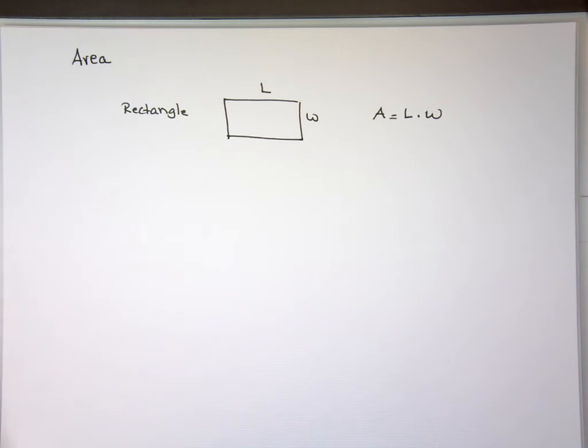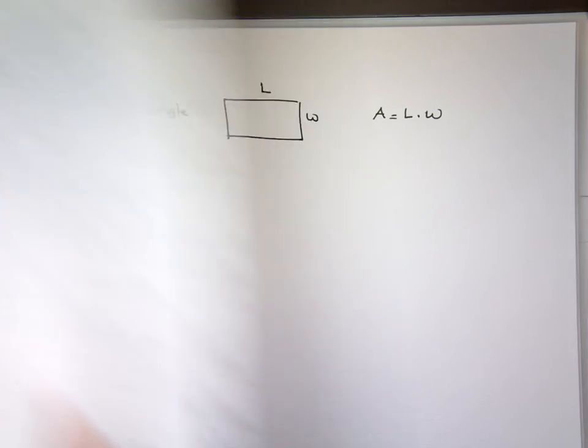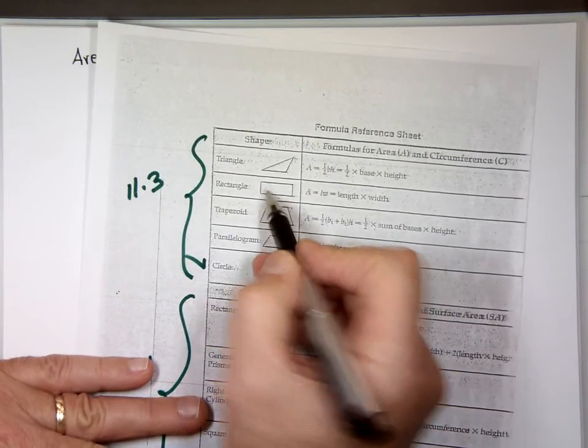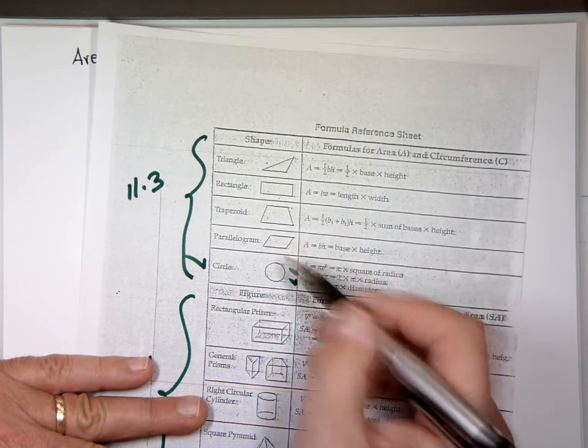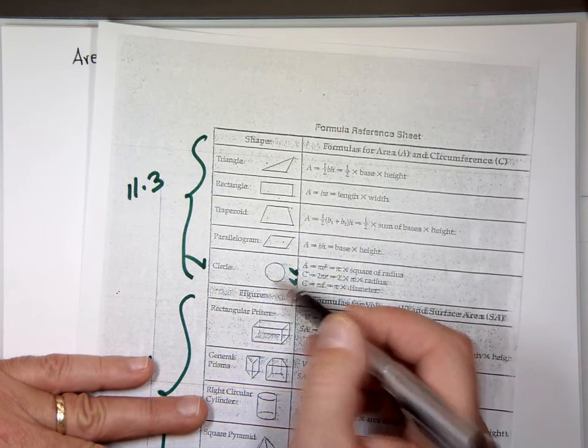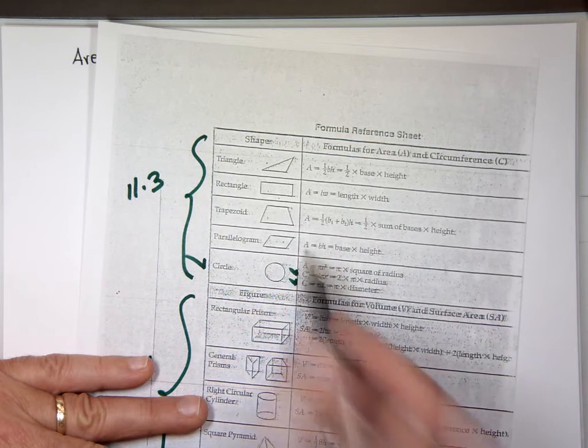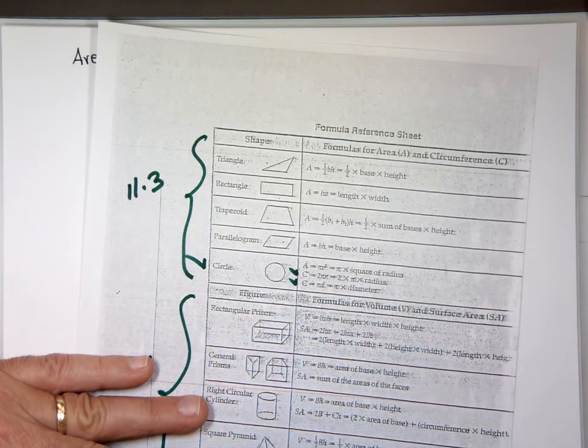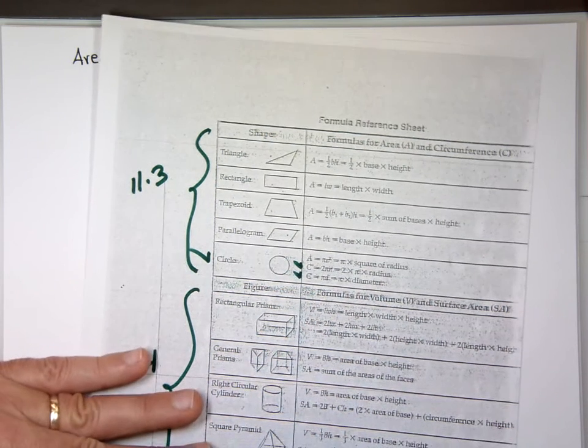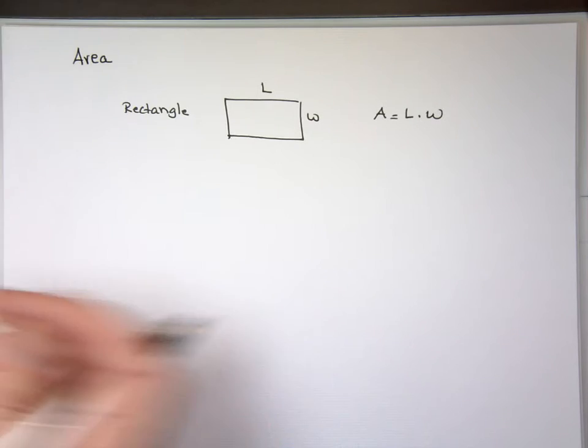All the stuff I'm going to be talking about today is right here on this cheat sheet. This is the rectangle, the triangle, the trapezoid, parallelogram and the circle. The area formulas are on that cheat sheet. So I'll just write them anyway.